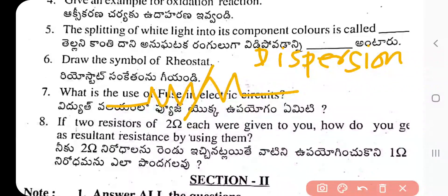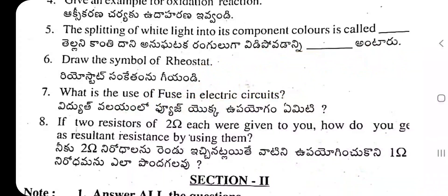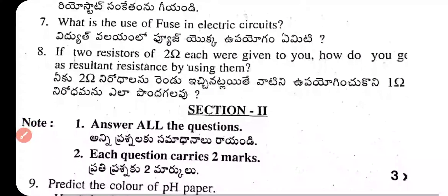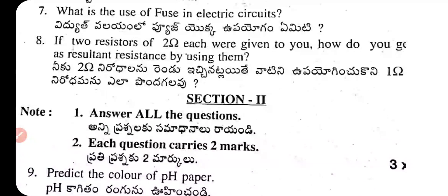The symbol of a rheostat is drawn. Question 7: What is the use of a fuse in an electric circuit? The answer is: to protect electrical appliances from damage due to overloading or short circuit.